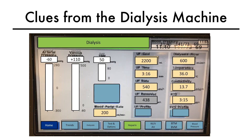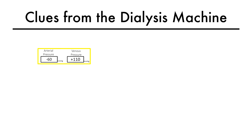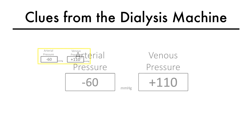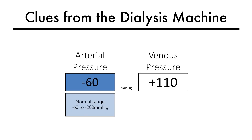This is the dialysis machine screen, where a lot of important information is displayed. Let's focus our attention on the arterial and venous pressure readings. The arterial pressure reflects the pressure in the pre-pump circuitry starting at the level of the arterial needle. A normal arterial pressure is approximately in the range of minus 60 to minus 200 millimeters of mercury, depending on the pump blood flow rate, with 15 gauge needles.